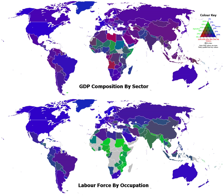The Industrial Revolution led to the development of factories for large-scale production with consequent changes in society. Originally the factories were steam-powered, but later transitioned to electricity once an electrical grid was developed. The mechanized assembly line was introduced to assemble parts in a repeatable fashion, with individual workers performing specific steps during the process. This led to significant increases in efficiency, lowering the cost of the end process.